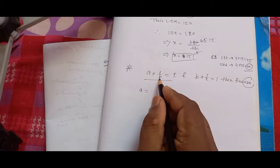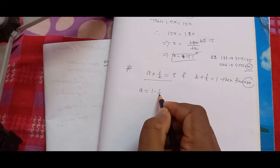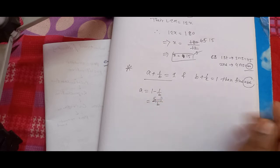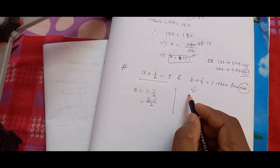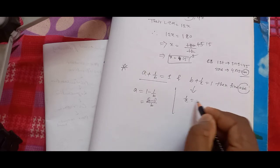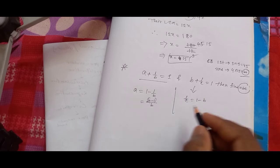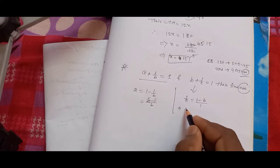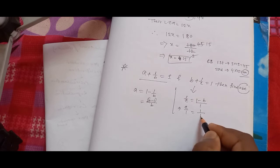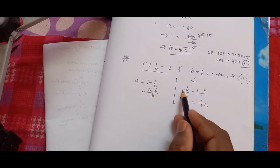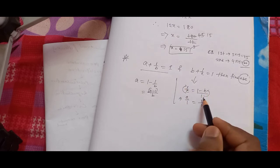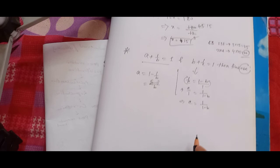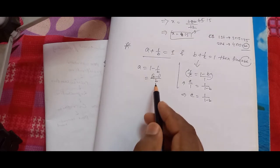From the first equation, a is equal to 1 minus 1 by b, which equals (b minus 1) by b. From the second equation, 1 by c is equal to 1 minus b, so c is equal to 1 by (1 minus b). So here a equals (b minus 1) by b, and c equals 1 by (1 minus b).